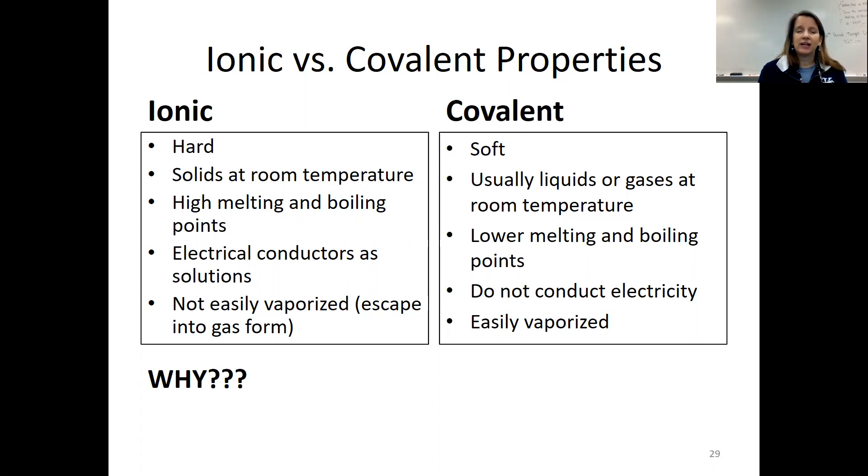We saw that the ionics had really high melting points and high boiling points, whereas the covalents tend to have lower melting points and boiling points. We saw that the ionic substances were really good electrical conductors when they were solutions, and that the covalents are not good conductors.